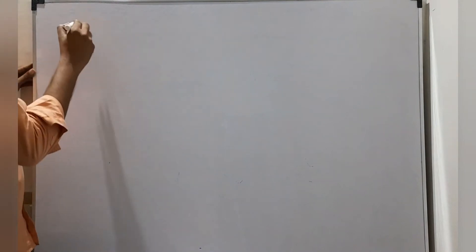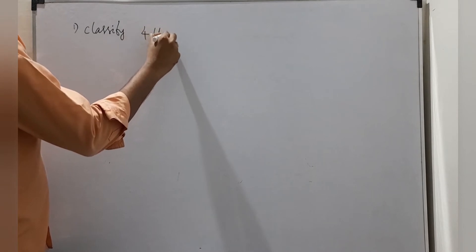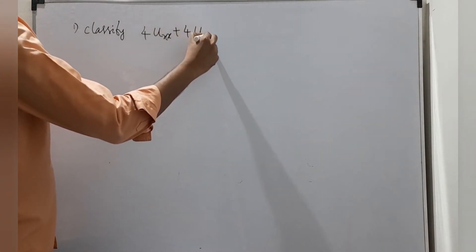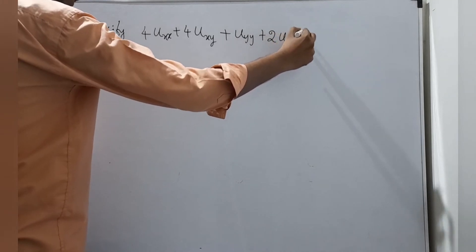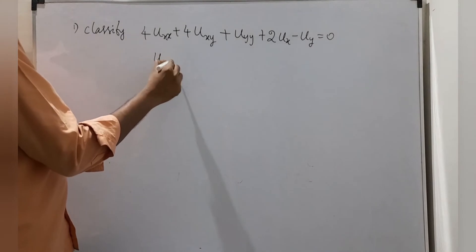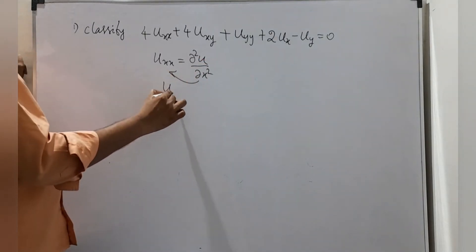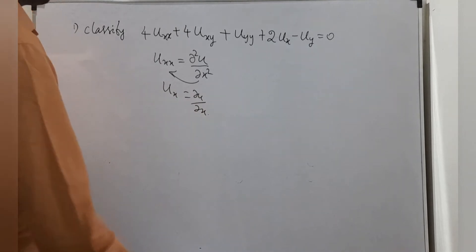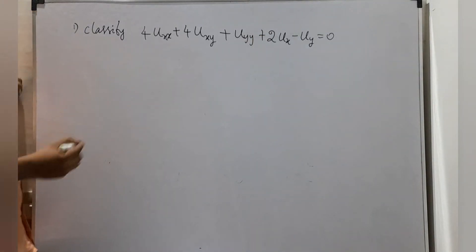Problem 1: Classify 4u_xx + 4u_xy + u_yy + 2u_x - u_y = 0. Here u_xx means dou²u/dou x² and u_x means dou u/dou x. We have to classify this second order partial differential equation. We only need the coefficients of the second derivatives: u_xx, u_xy, and u_yy — no need to worry about the remaining terms.